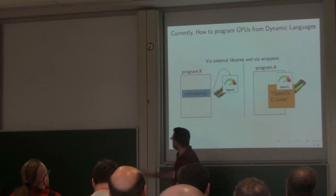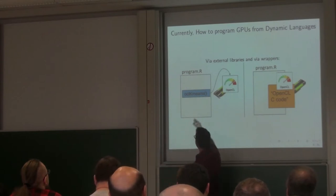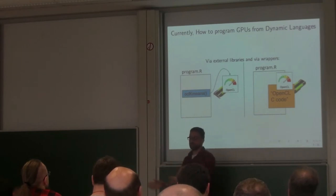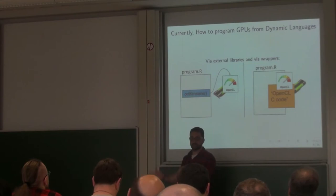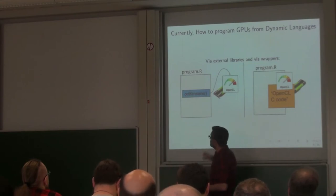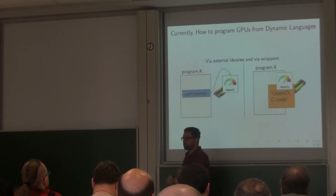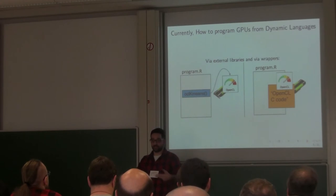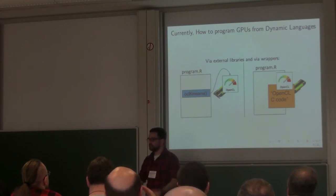The first one is the external library. Imagine that you have your program written in R, and in the middle you have a call to a function, a native function. You execute that function in a third-party byte using OpenCL on the GPU. But if you want to execute a for-loop on a GPU, you have to go to another library or extend the library.